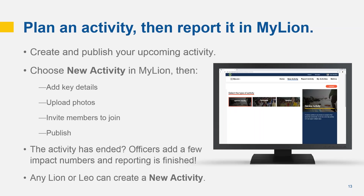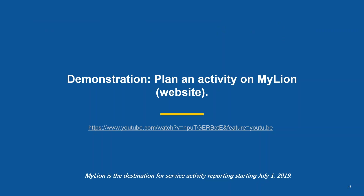MyLion changes that. We now have a pathway to not just report a service activity, but also to plan. There are also some distinct benefits to planning in MyLion. We can invite other Lions and Leos. We can send messages to members to help get organized or share updates. And if we publish our activity in a more public manner, we can keep our district or multiple district leaders updated on what activities they could attend or support, since those activities will be searchable. Please enter the following URL in your browser or click the link to the plan an activity demonstration in this video's YouTube description.